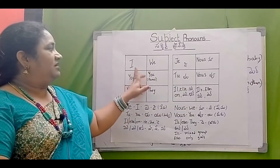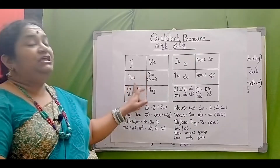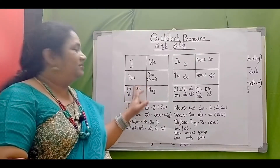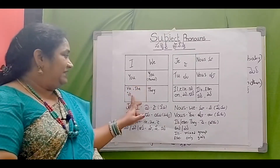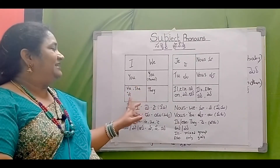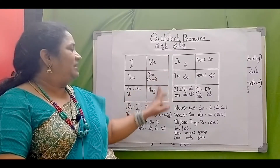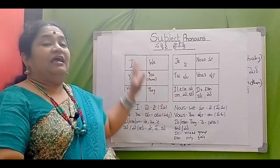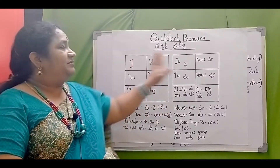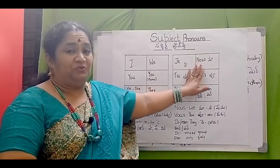First singular: I, you, he, she, it, we, you, and they. This is the French word for each.